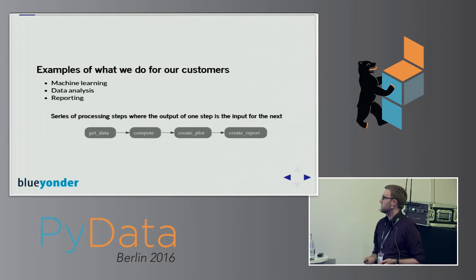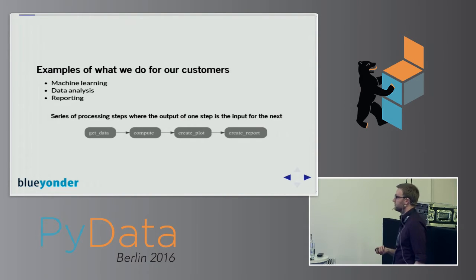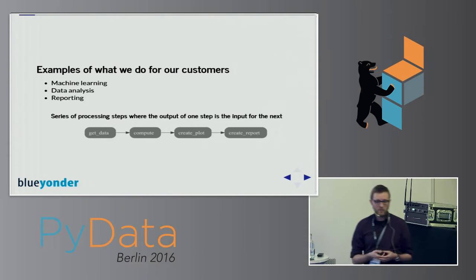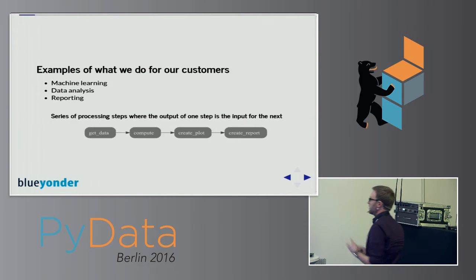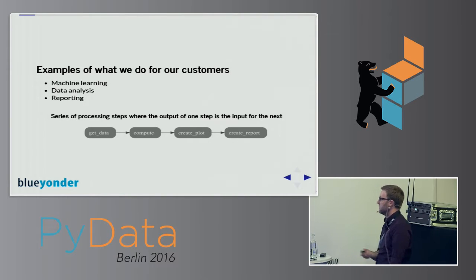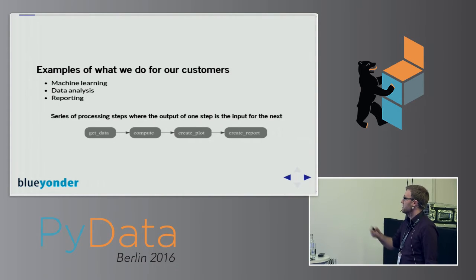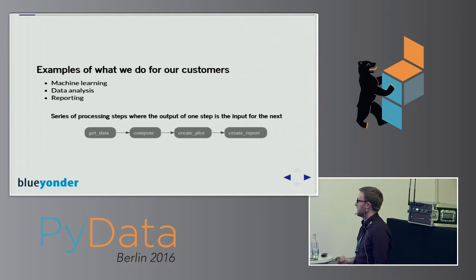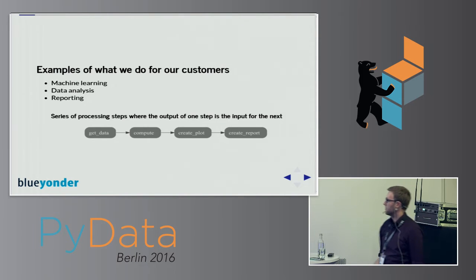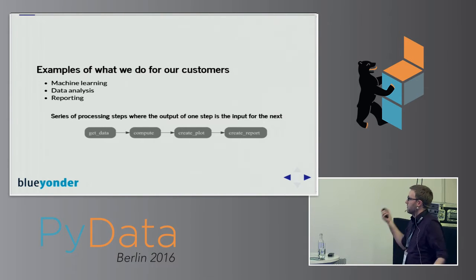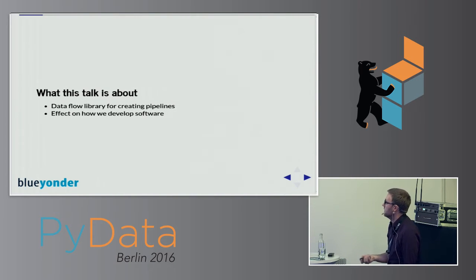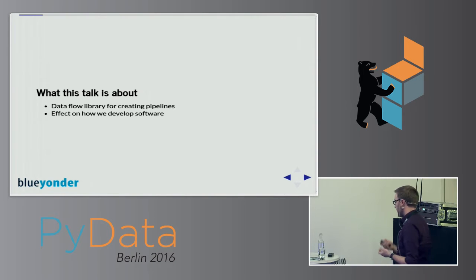Here are a couple of examples of what we typically do: machine learning, data analysis, and reporting for customers. When we look at these examples they often look quite similar, in the sense that we have a couple of functions and they get applied one after the other. So basically we have pipelines — a series of processing steps where the output of one function is fed to the next function.